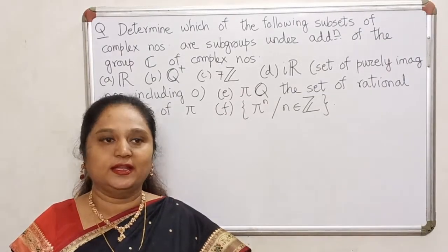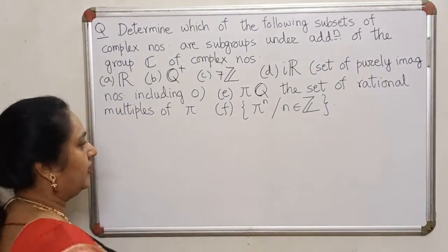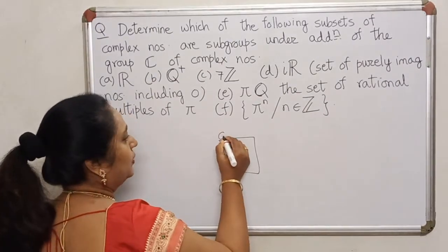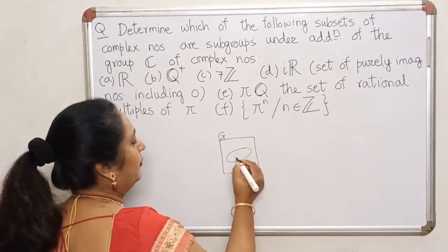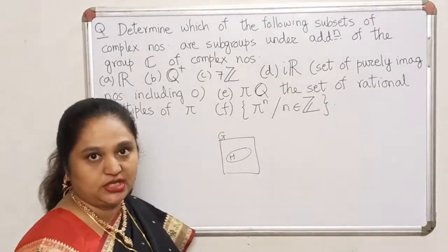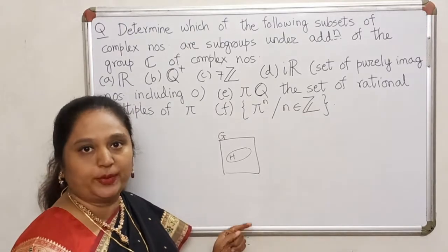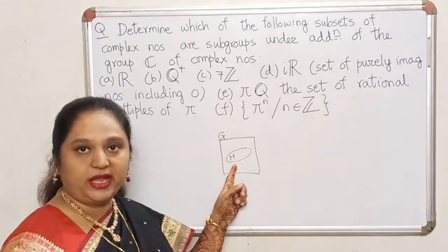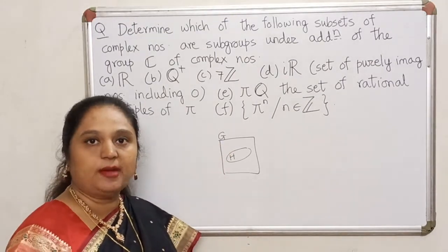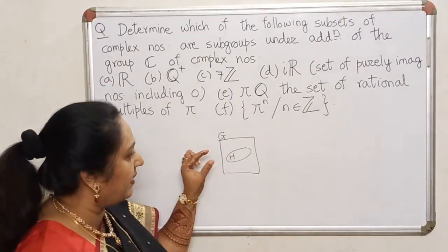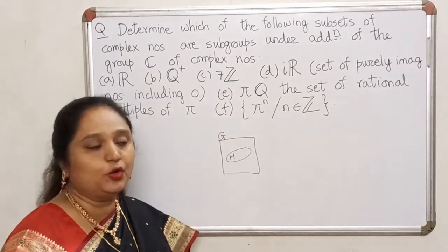Hello dear students. In the last lecture we saw the definition of a subgroup. If I have a group G with some binary operation star on G, and if H is a subset of G, and if H also becomes a group under the same operation as in G — it's very important that H has to have the same algebraic structure — then it's like having a mini group sitting inside a bigger group, and the smaller one is called a subgroup of the bigger group.